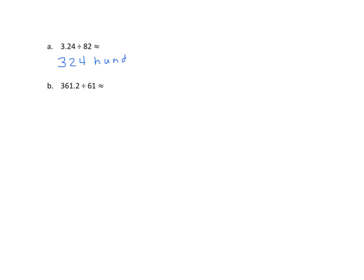Each of these problems will have a unique strategy. We have to be flexible in thinking about these. The first thing I notice is I have a decimal in my divisor. Sometimes it's easier to work without the decimals, and one way to do that is to put things in unit form. I'm going to rewrite my dividend into unit form, which would be 324 hundredths. That's one of our strategies we can use.